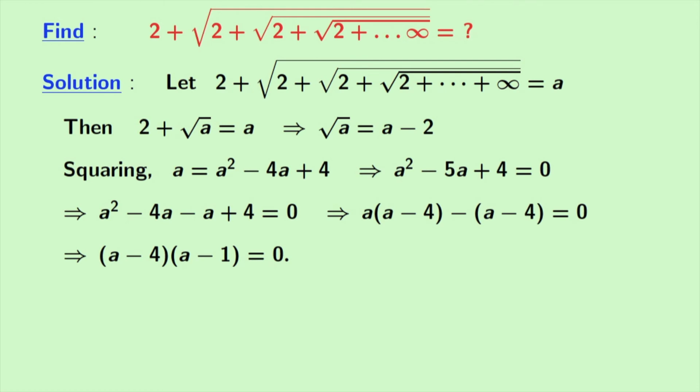And this gives us the value of a is equal to 1 or 4. Now look that the value of a is 2 plus something positive. So a should definitely be greater than 1. So the possibility of a equal to 1 is ruled out. So a is definitely equal to 4.